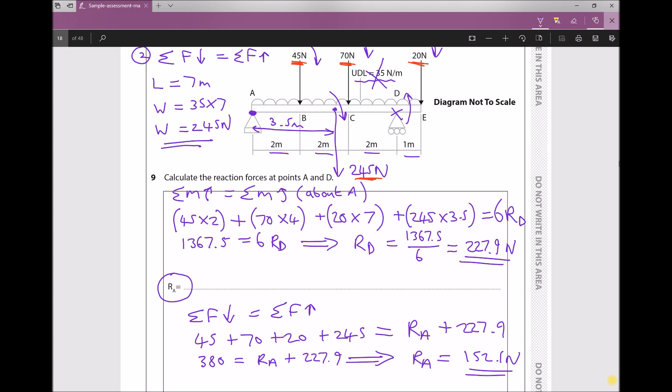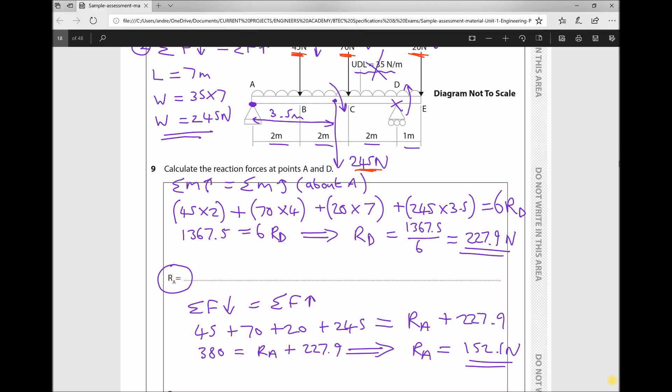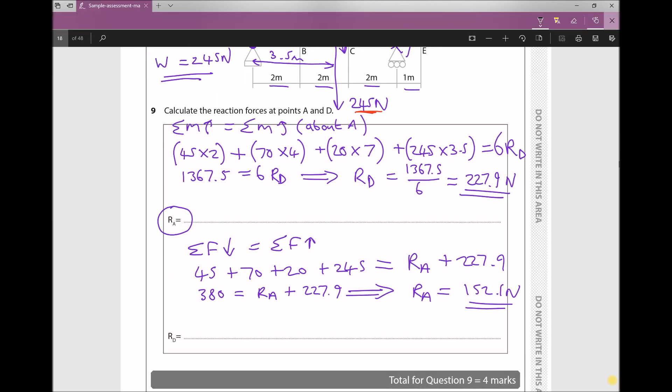Now I'm fairly confident that if you left the question there you would get all of the marks, but we'll just fill in our reaction at A and our reaction at D for completeness. Let's switch colours. And here I'm just going to write RA = 152.1 Newtons and RD = 227.9 Newtons.